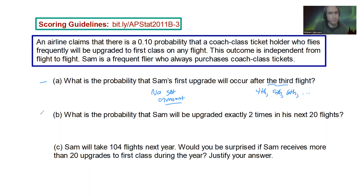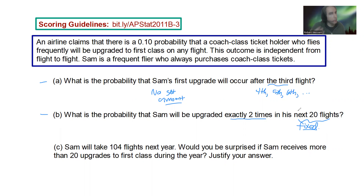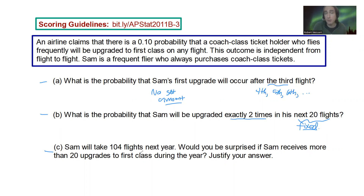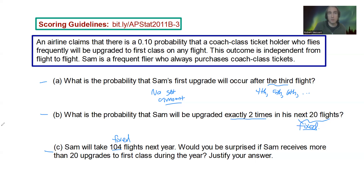For Part B, what's the probability that Sam will be upgraded exactly two times in his next 20 flights? There we have a fixed amount. And then Part C, Sam will take 104 flights next year — would you be surprised if Sam receives more than 20 upgrades to first class during the year? Justify your answer. Again, 104 flights — that's a fixed amount. So this deals specifically with section 6.3, where we're talking about binomial and geometric.